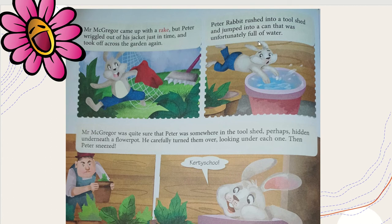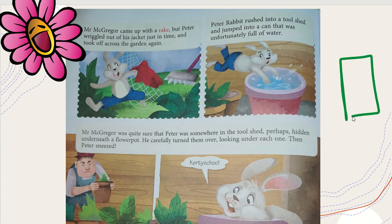Peter Rabbit then rushed into a tool shed and jumped into a can that was unfortunately full of water. Mr. MacGranger was quite sure that Peter was somewhere in the tool shed, but with so many things inside, he didn't know exactly where. He thought the rabbit might be hiding under a flower pot.